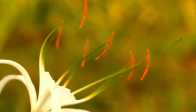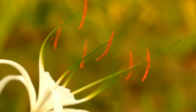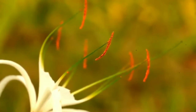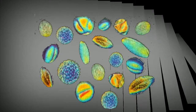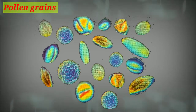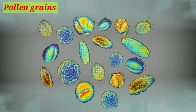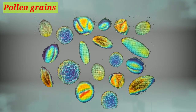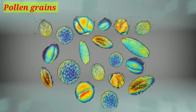Several thousands of pollen grains are formed that are released with the dehiscence of anther. Pollen grains are in different size, shapes, colors and designs.